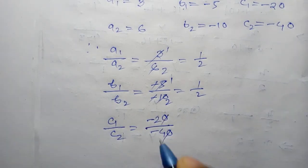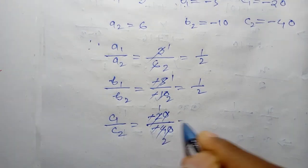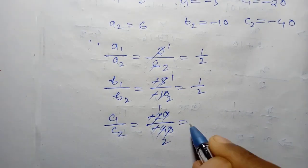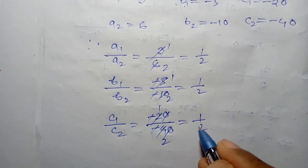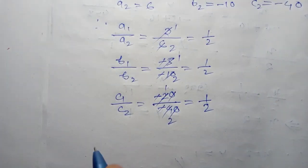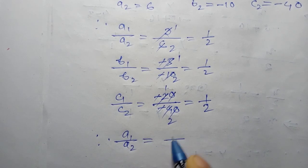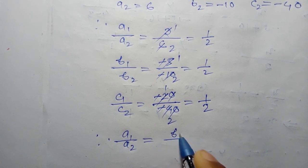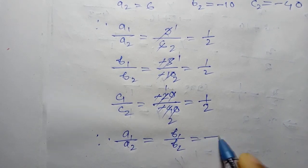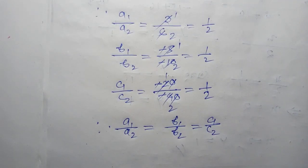Since a1 divided by a2 equals b1 divided by b2 equals c1 divided by c2 — that is, 1 by 2 — the two equations are consistent and dependent, meaning they have infinitely many solutions.